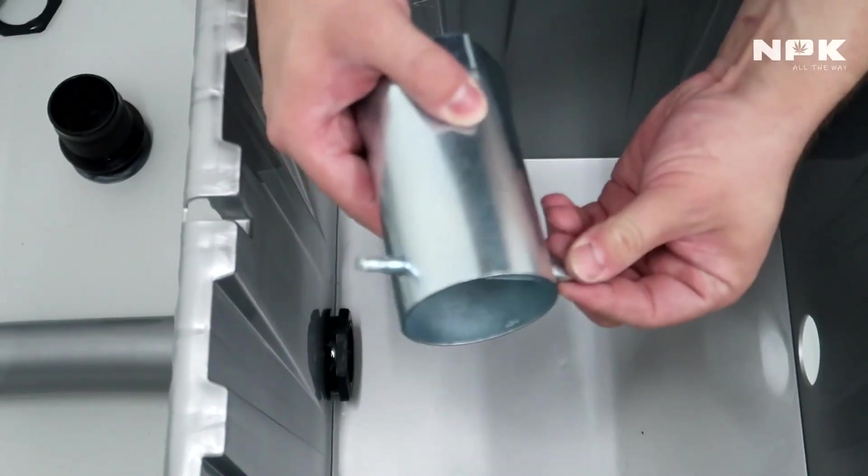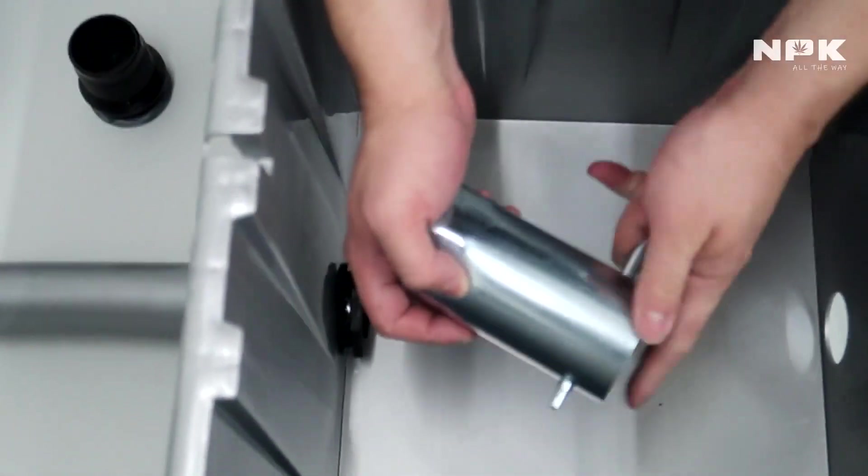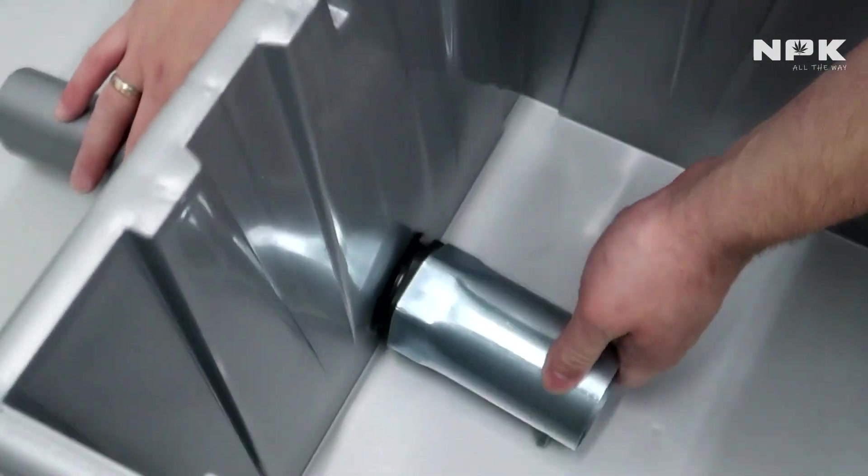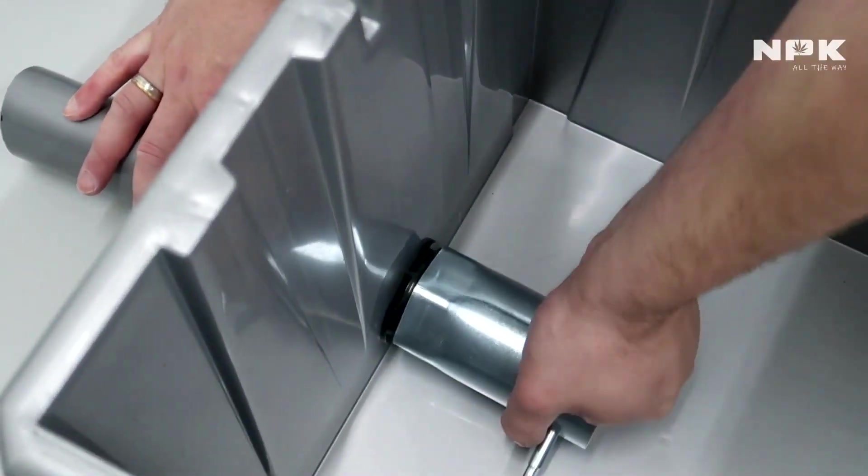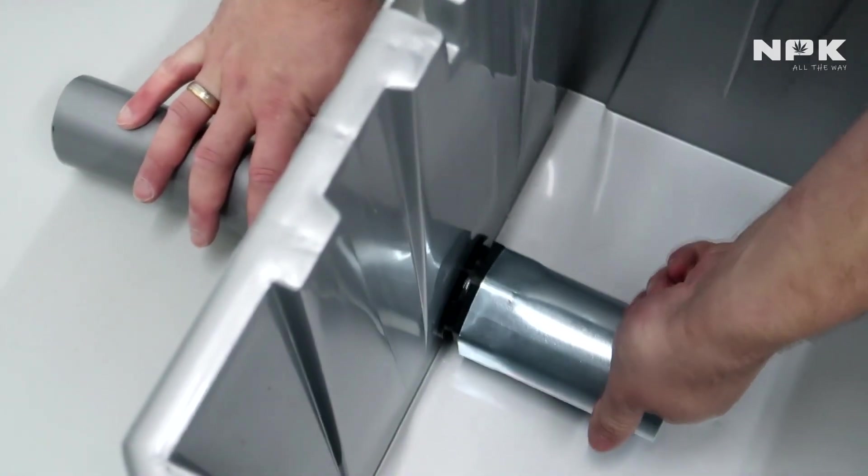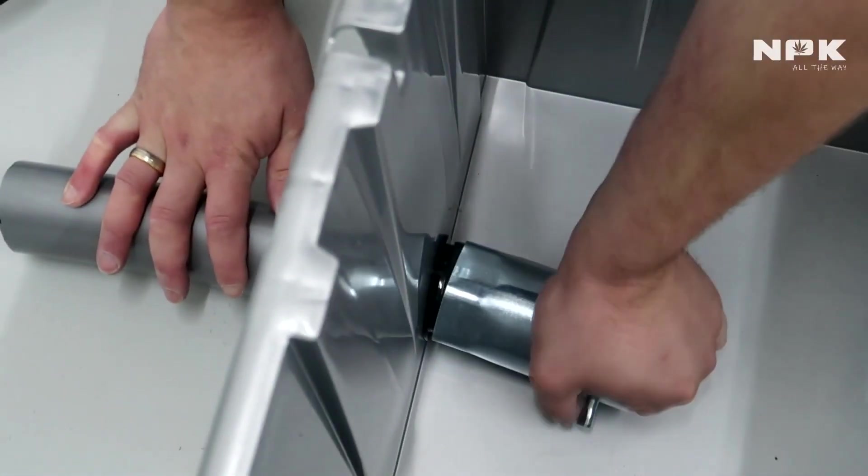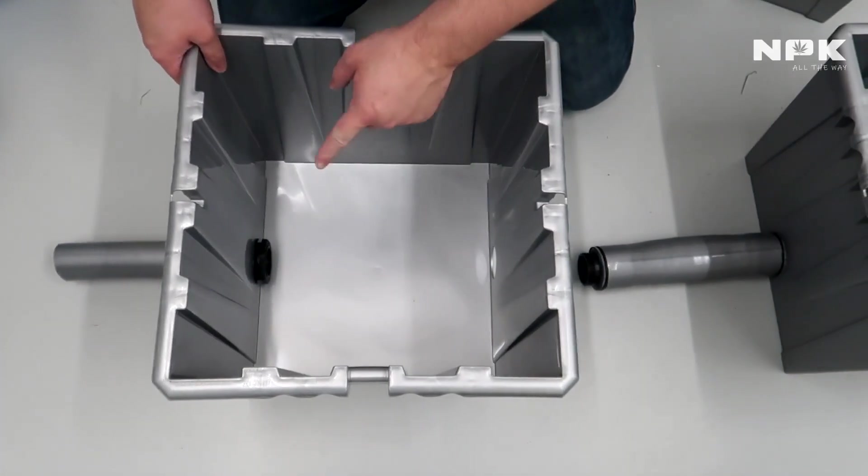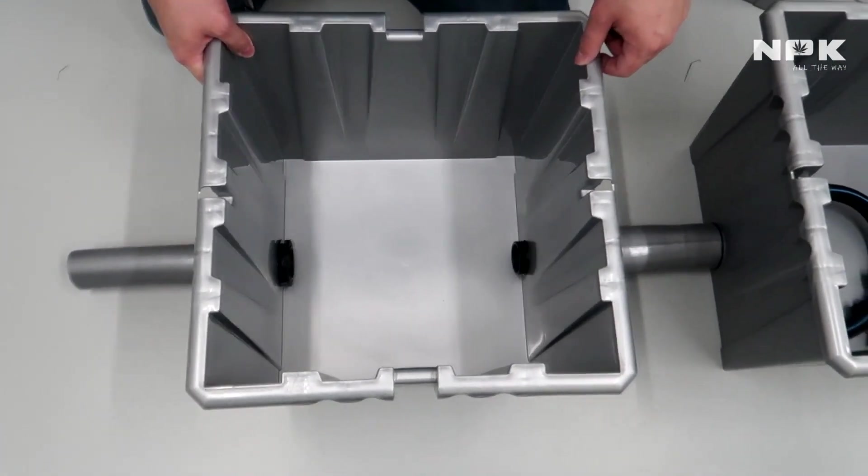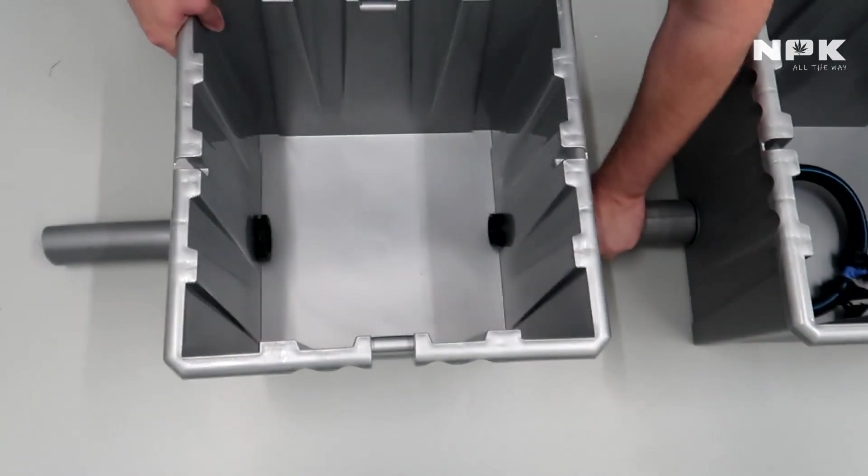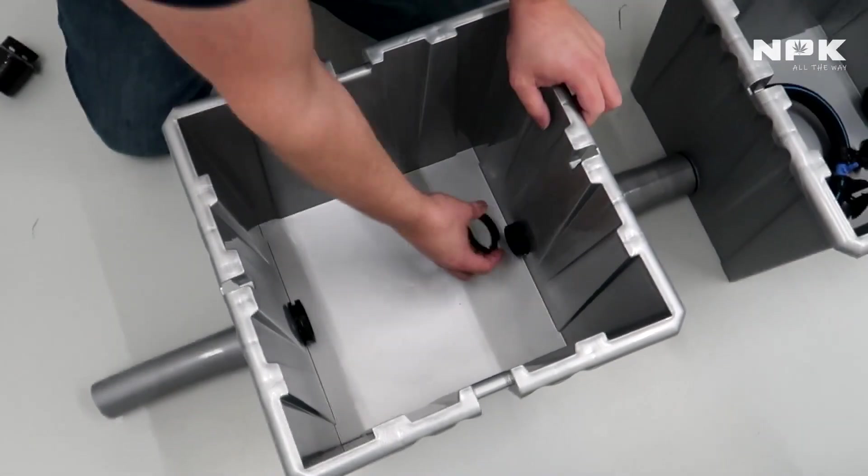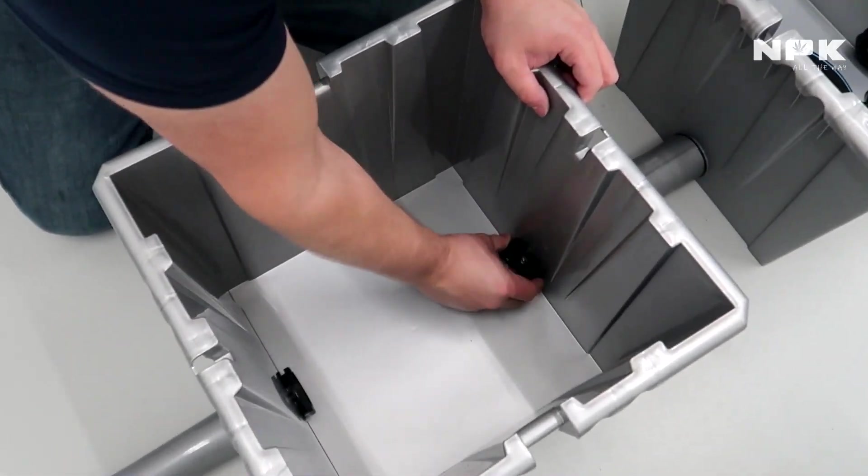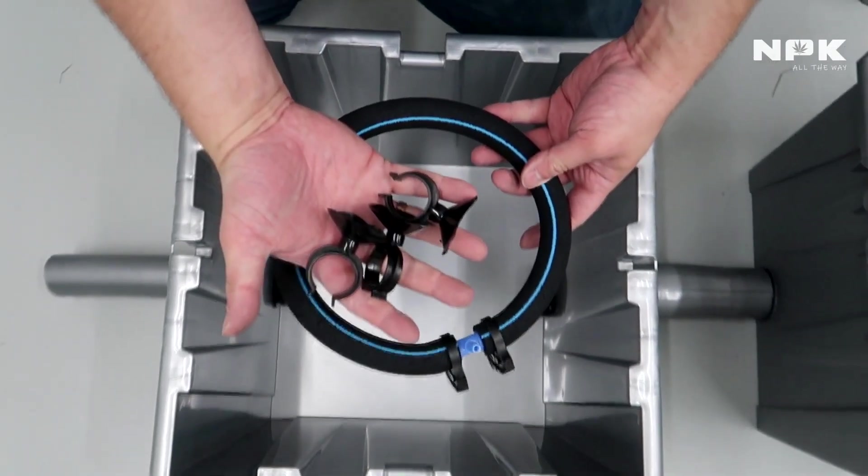Last of all you can attach the ring to fasten everything. They supply you with a handy tool to fasten these things so you can make them as tight as possible. Don't overdo it, we don't want to break anything. Then you can take your other bucket and slide them together, making your system the way you want it to be. They supply enough pipe so no worries.